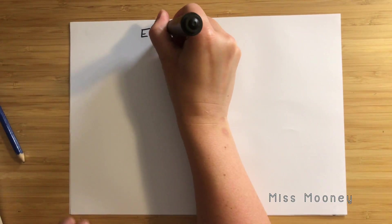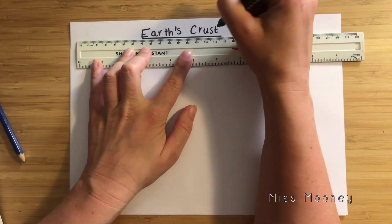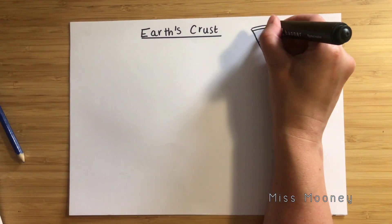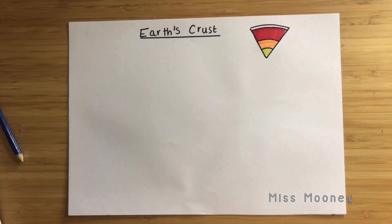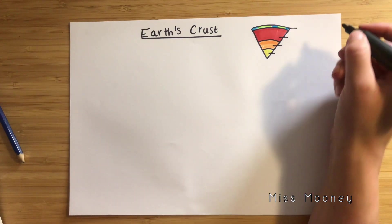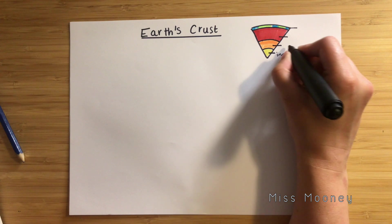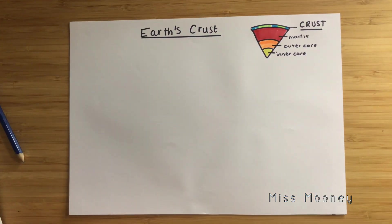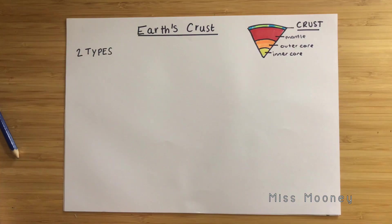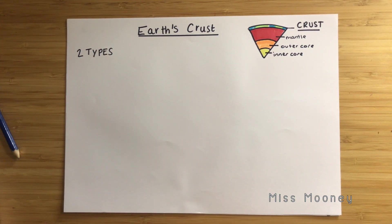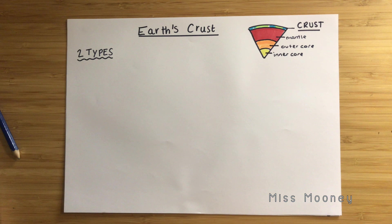We're going to look at the crust in a little bit more detail. Here is a reminder of the cross section of the earth — pause the video and see if you can label the sections yourself. At the top we have the earth's crust, and there are actually two types: oceanic crust and continental crust. This is really important in order to understand what happens when plates collide, as some plates are made up of continental crust and some are made up of oceanic crust.